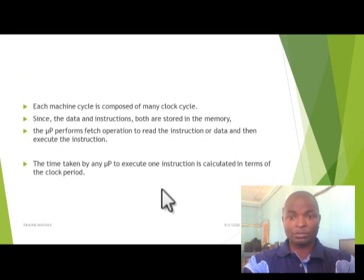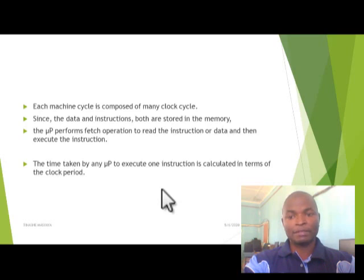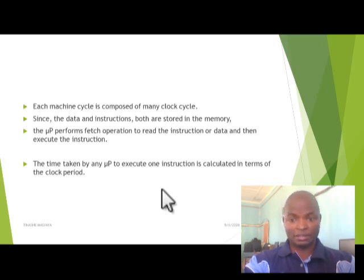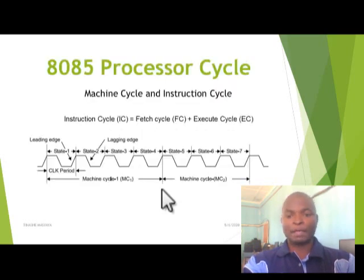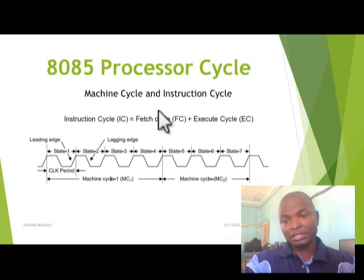Each machine cycle consists of many clock cycles, which exist in two states. Since data and instructions are both stored in memory, the microprocessor performs a fetch operation to read the instruction or data and then execute that instruction. The time taken by the microprocessor to execute one instruction is calculated in terms of clock periods, which are also called T-states — as well as machine cycles and instruction cycles.